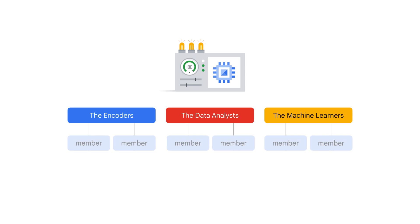Machine types are sort of like the family members that offer combinations of vCPUs, memory, local storage, network capabilities, and other features. What a family.